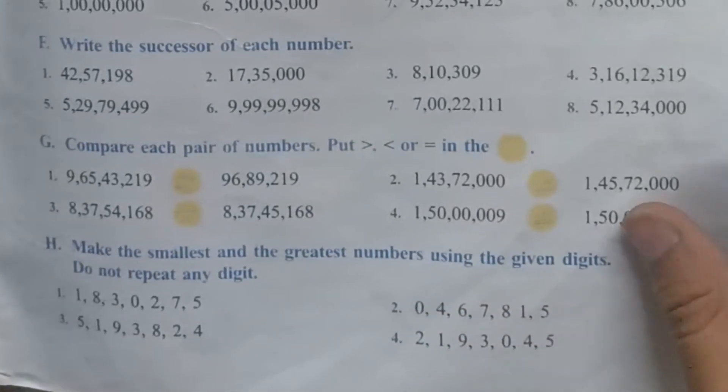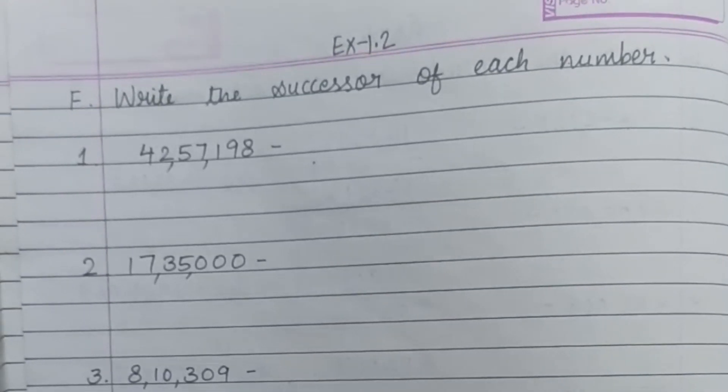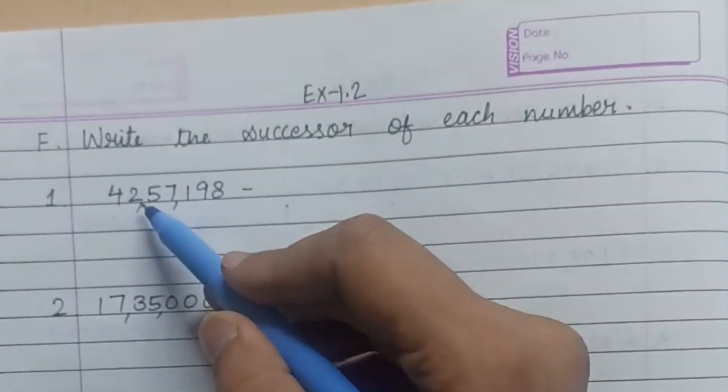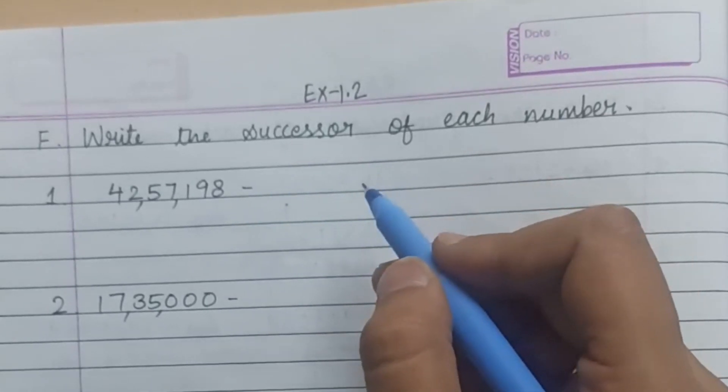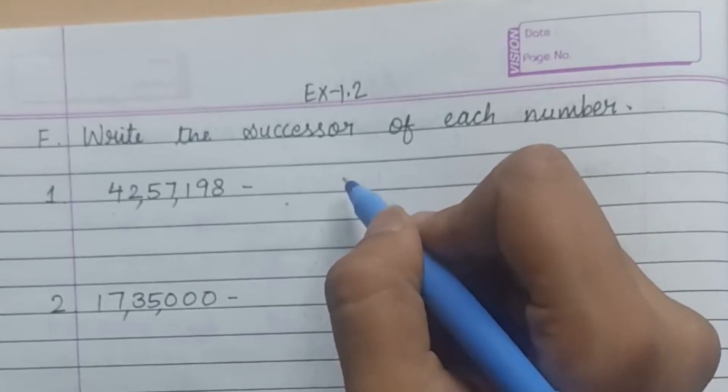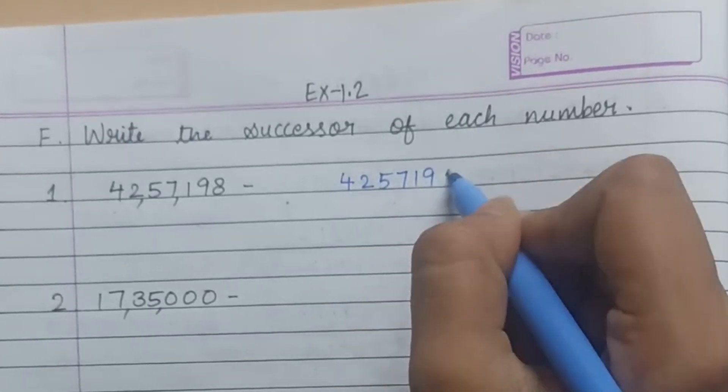Look at the first question: 42,57,198. The successor means the next number. What you have to do is add 1. Write the question.